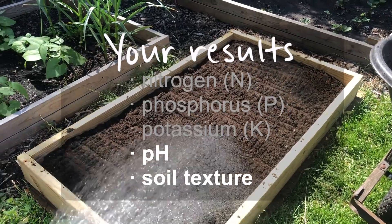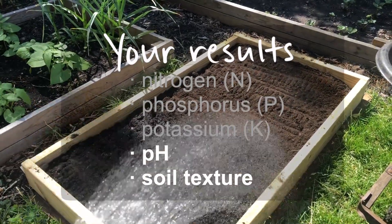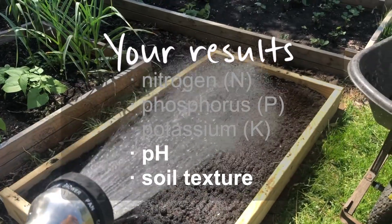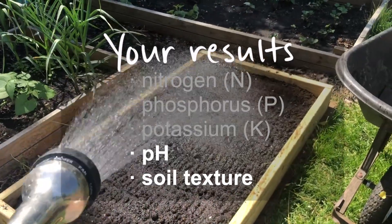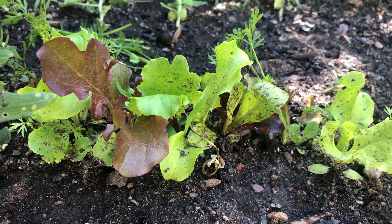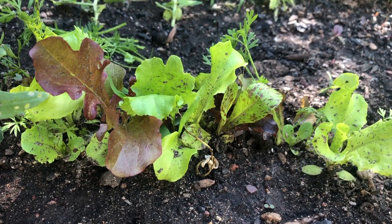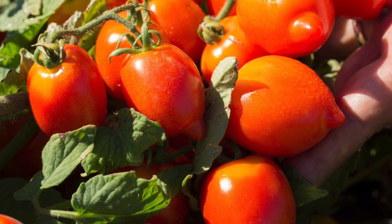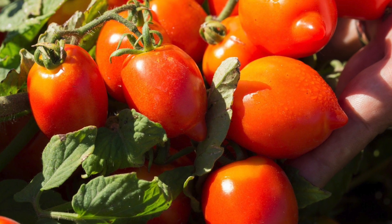In addition to our three macronutrients, the soil lab's regular test measures your soil's pH levels and classifies its texture. When looking at pH, the lower the number, the more acidic the soil is, and the higher the number, the more alkaline the soil is. pH can be really important if you're seeing nutrient issues in the garden, because sometimes a high or a low pH can actually inhibit the uptake of different nutrients into the plant.